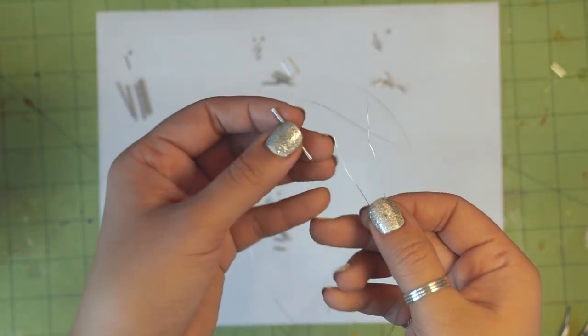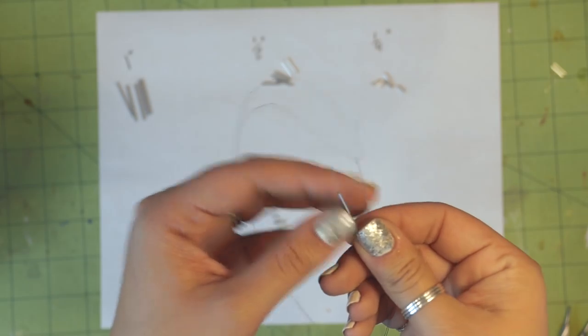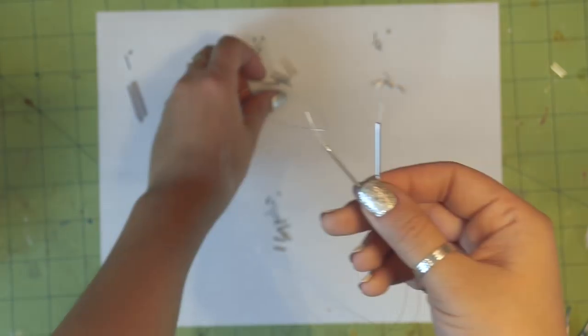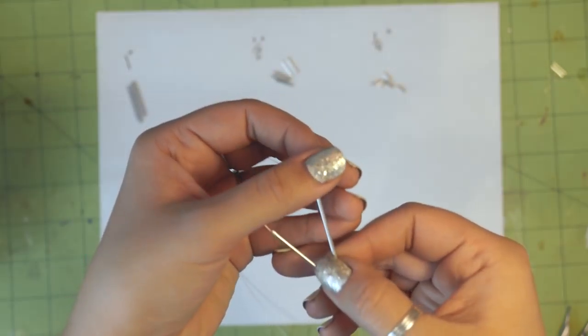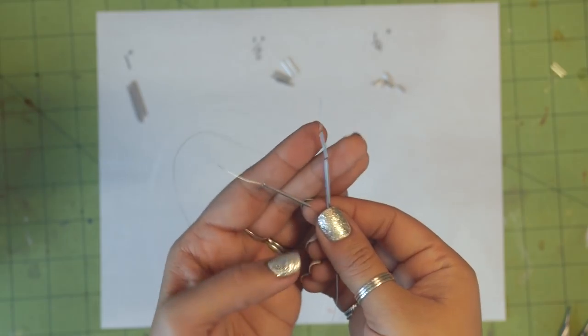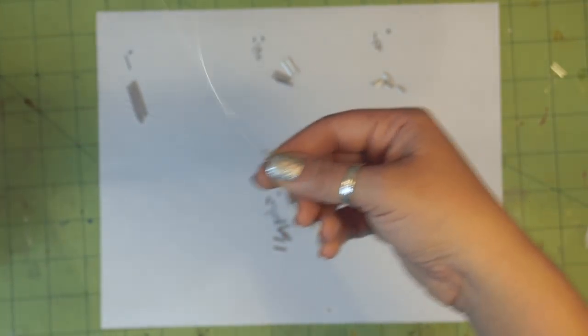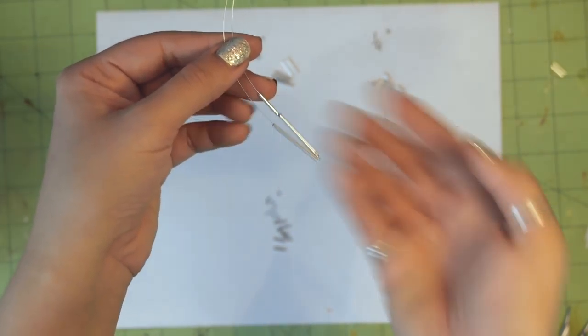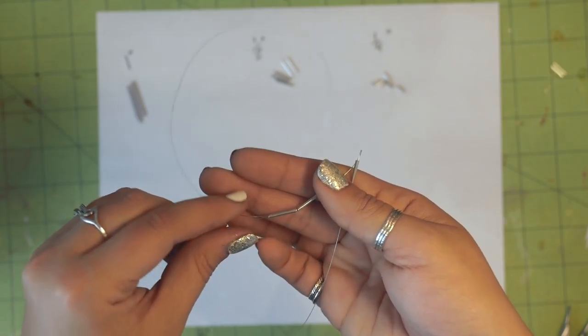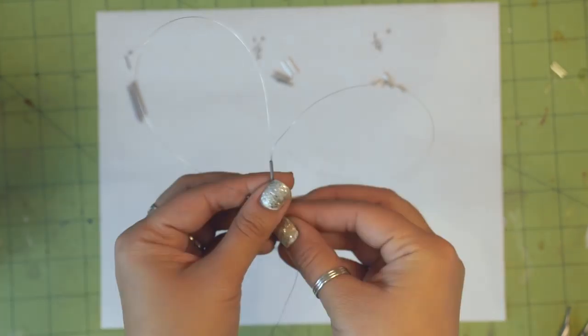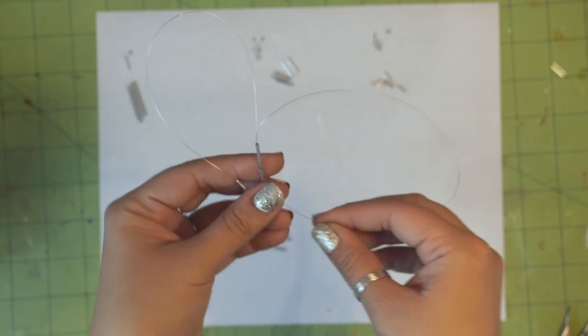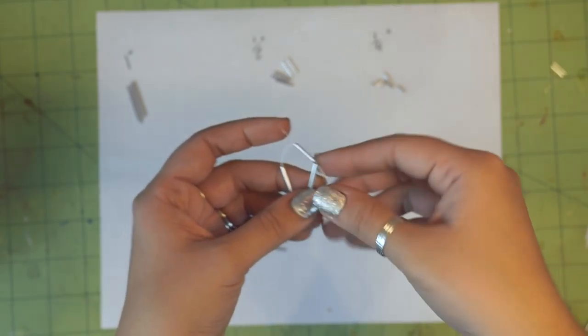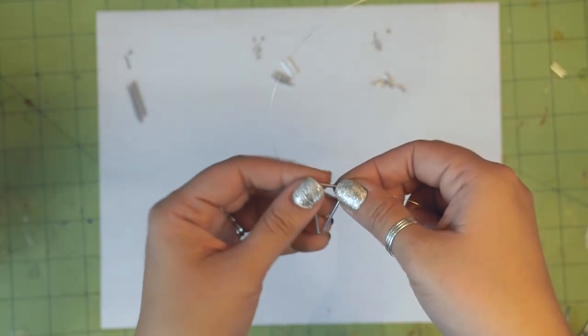On one end, thread a 1 inch piece. On the other end, thread a 1 inch piece and then a half inch piece. Thread the first piece of wire through the half inch piece and pull it tight. It should form a triangle like this.